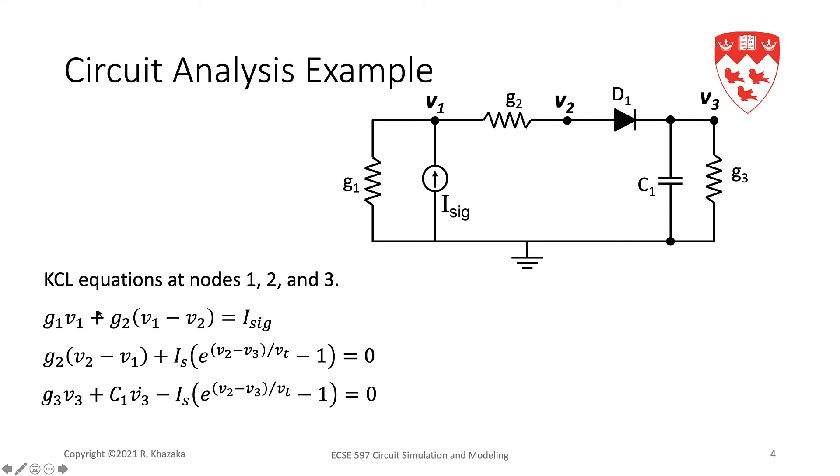So these are our three equations and we have three unknowns. Let's rewrite these equations and reorder the terms so we can collect all the terms with V1, all the terms with V2, etc.